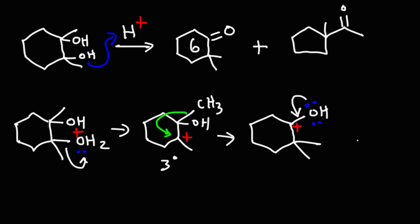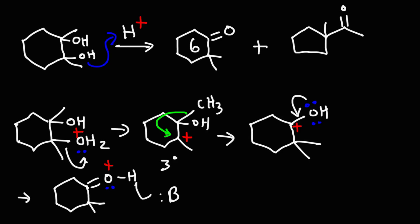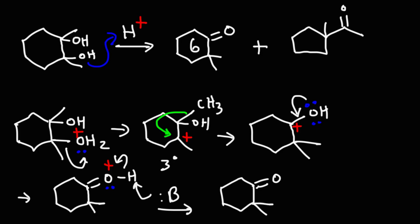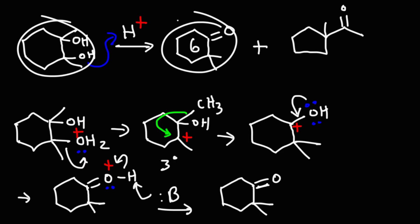Converting the hydroxyl group into a protonated ketone. Then in the final step of this mechanism, we're going to use a weak base to remove the proton. A protonated ketone is a strong acid — it's highly acidic, with a pKa around negative 6 or negative 7. So it's very easy to remove this proton, and we get this product. That's how we can show the mechanism for the conversion of this diol into this particular ketone.